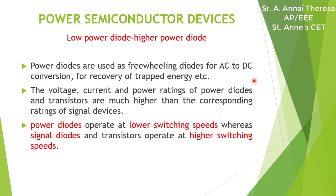Power diodes are similar to p-n junction signal diodes. However, the voltage, current, and power ratings of power diodes and transistors are much higher than the corresponding ratings of signal devices. Power diodes operate at lower switching speeds, whereas signal diodes — low power diodes — and transistors operate at higher switching speeds.